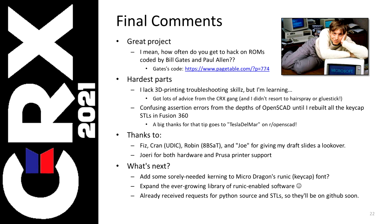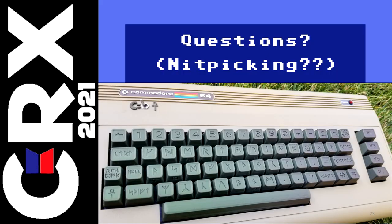And what's next? First of all, a call: anybody out there want to take MicroDragon's Runic keycap font and add kerning to it? That would be really useful and would have improved things — I just didn't make the time to do that. I would like to expand the ever-growing library of Runic-enabled software. And I've already received lots of requests for the Python source and the STL files as I posted these things on social media as little teasers, so I'll be trying to get those all up on GitHub very soon. Thank you for attending. Right after the Ken Arnold bumper music, I'll be available for any questions or comments you might have. Thanks.